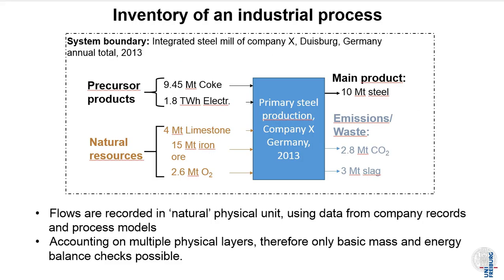We start out with the basic inventorying of industrial processes. We take an industrial process here symbolized by this blue box — primary steel production by a certain company in Germany — and this box has inputs from other industrial processes, called precursor products; here it's coke and electricity. The other inputs are natural resources taken from the natural environment, and then there are main products and byproducts that go to other industries, and emissions and waste that go to nature.